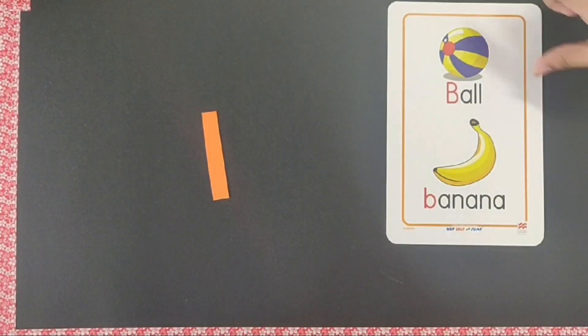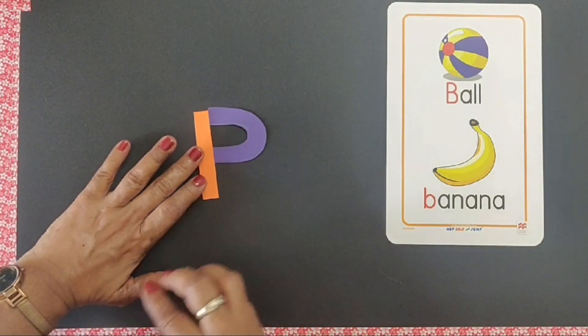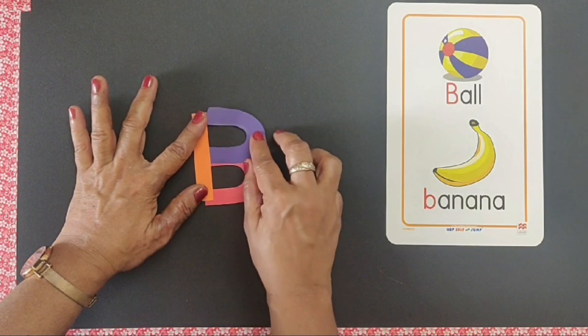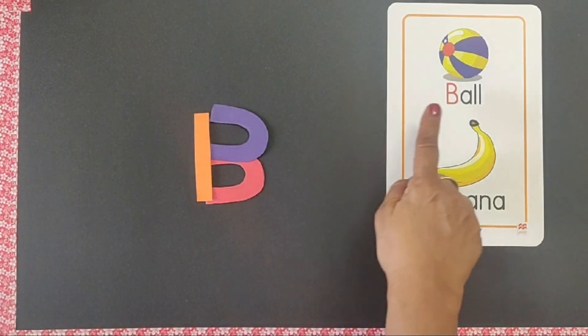Now B. So we make it like this. Take two smaller narrow curves and make it like this. B. B says buh, B for ball.